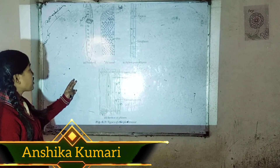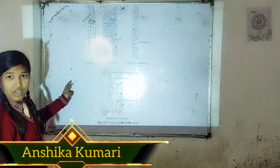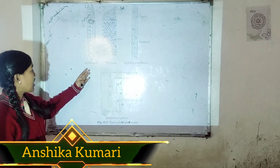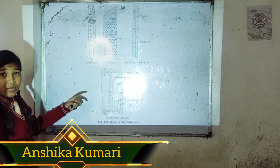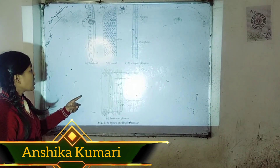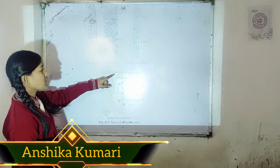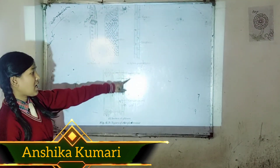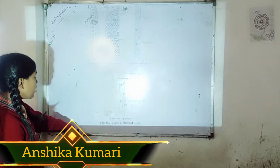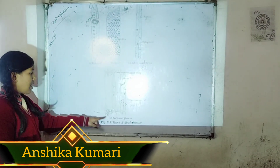Complex permanent tissue consists of two parts: Xylem and Phloem. Xylem consists of tracheids, vessels, xylem parenchyma, and xylem fiber.